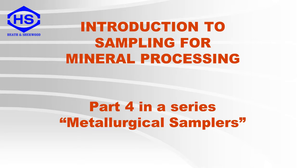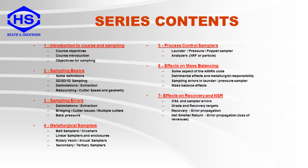Welcome to the fourth part of the presentation series, Introduction to Sampling for Mineral Processing. In this video we will look at metallurgical samplers, which will include belt samplers and crushers, linear samplers and enclosures, rotary vesen and arcule samplers, and secondary and tertiary samplers.